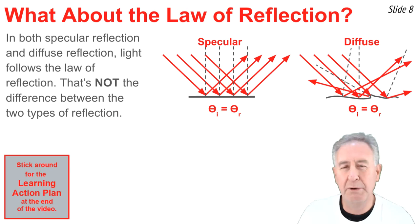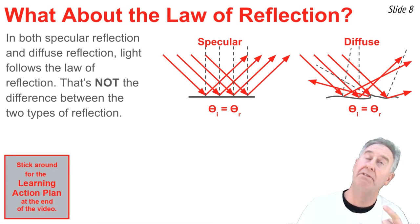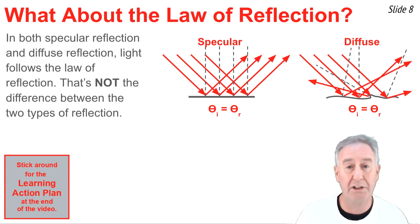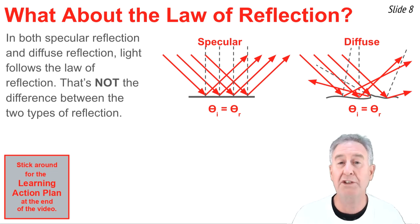But wait, isn't specular reflection a situation where the law of reflection is followed, but in diffuse reflection it's not followed? Nope, that's not true. The law of reflection is followed in both specular and diffuse reflection. Matter of fact, it's because the law of reflection is followed that these two types of reflection are different from one another.